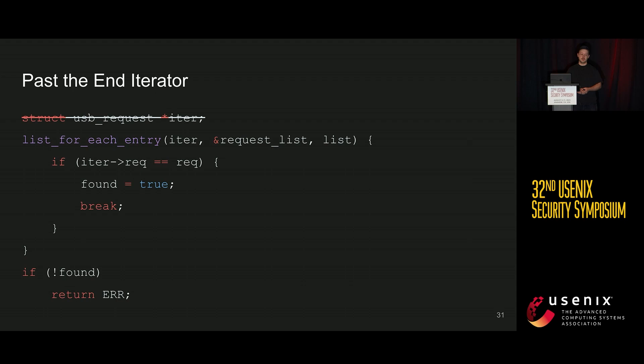The proposed fix is to declare the iter variable inside the loop by upgrading the C standard so you can declare variables inside for loops. By doing so, you can't use iter after the loop anymore, eliminating the risk of misusing it. You simply introduce an additional variable — in this case, found — set it to true if you found the element, and use that intentional variable to check whether an element was found after the loop.